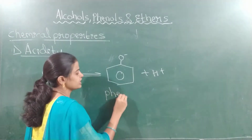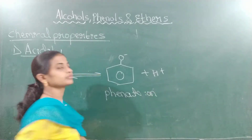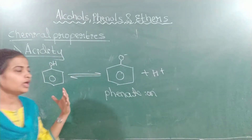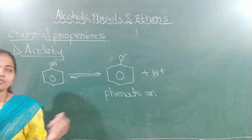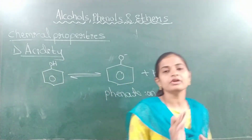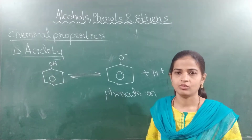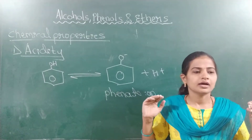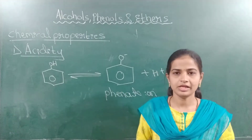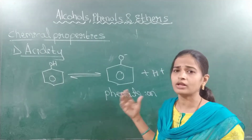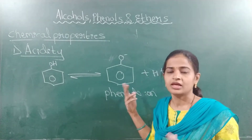What is formed is the phenate ion. Phenol, when it releases a proton in the presence of water, forms the phenate ion. The phenate ion formed is resonance stabilized. All structures have the tendency to attain stability, but phenol has the opportunity to attain stability by releasing the proton — and that is what it does.